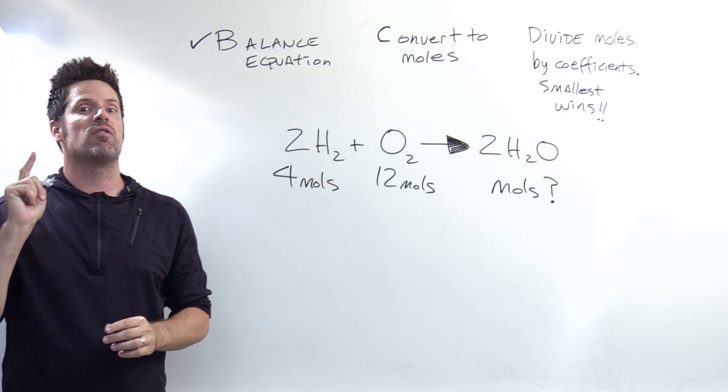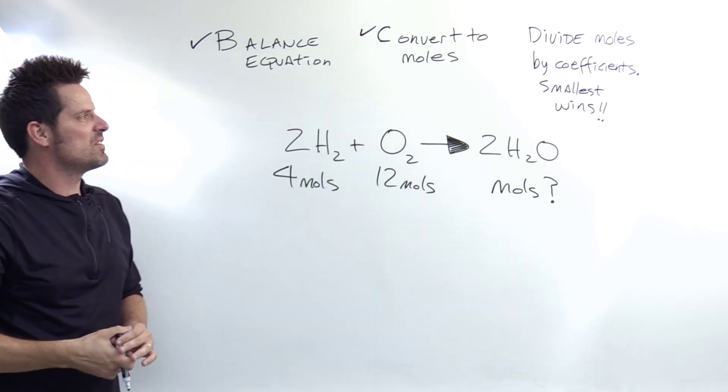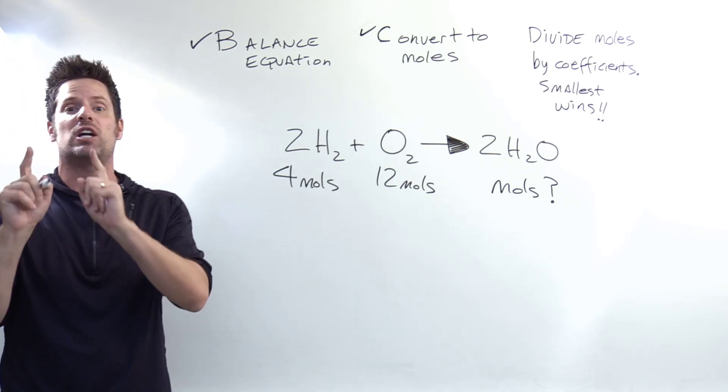Step C is convert everything to moles. It's also given to us all in moles, so we're done with that. And then step D is divide each of the mole amounts by their corresponding coefficients.